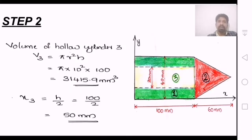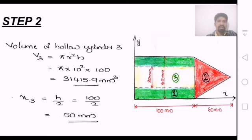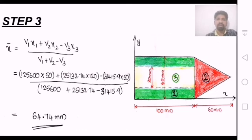For the third figure, the hollow cylinder has a 20 mm dimension. The cylinder volume is pi r square h, with height 10 mm and total height reference of 100 mm. The center of gravity formula is: x-bar equals v1 x1 plus v2 x2 minus v3 x3 divided by v1 plus v2 minus v3.